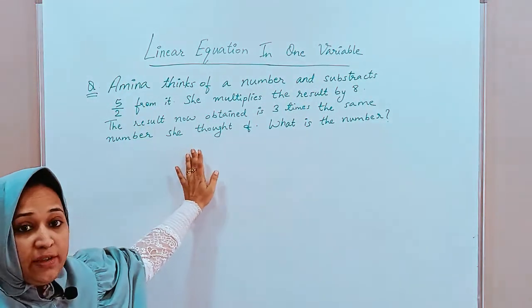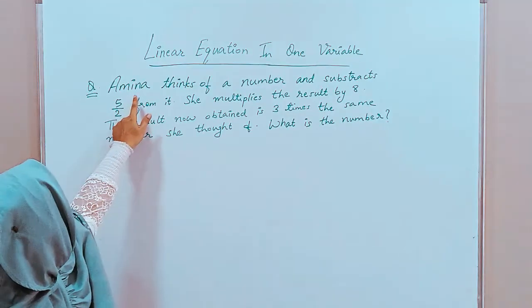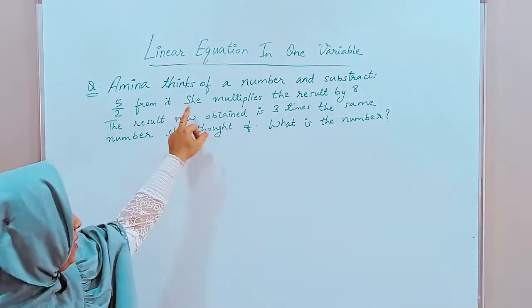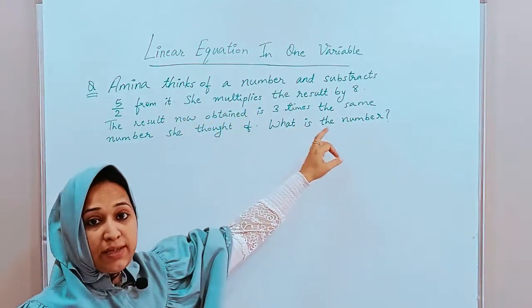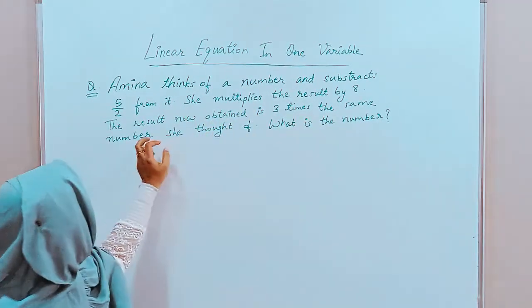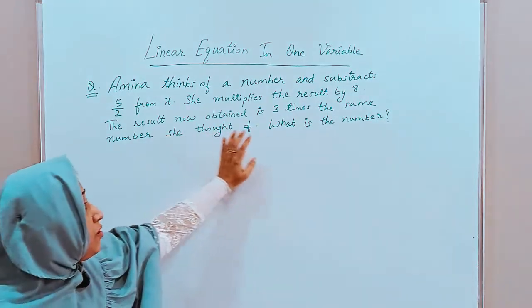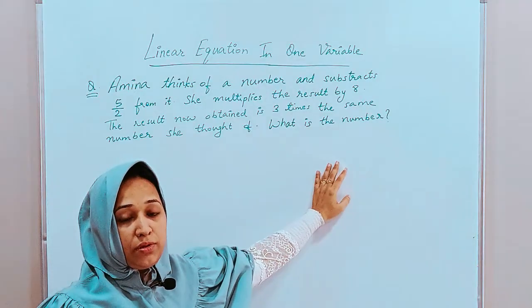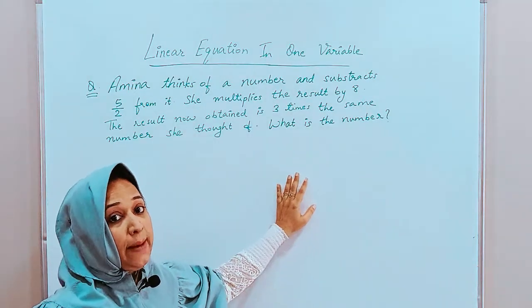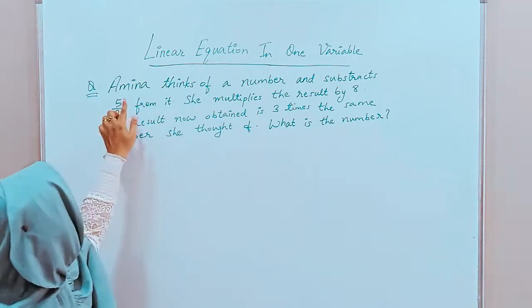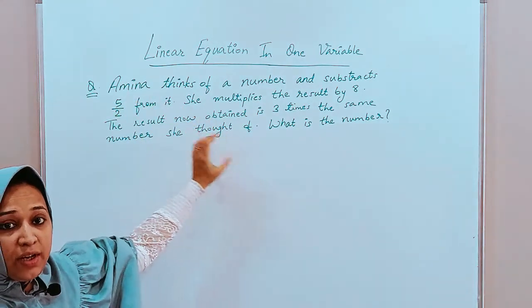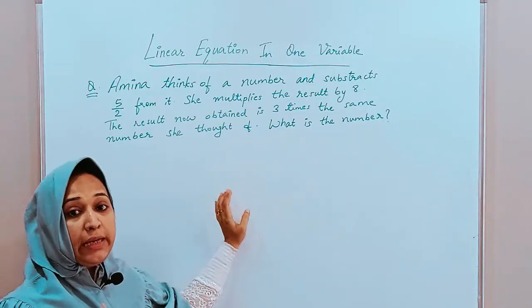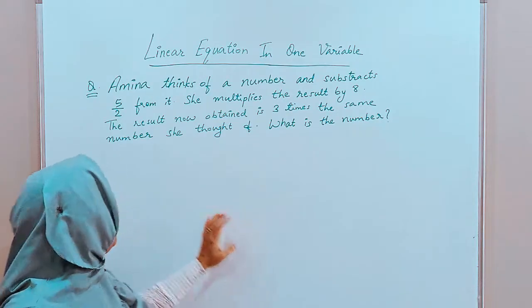Now, let us read the question first. Amina thinks of a number and subtracts 5 by 2 from it. She multiplies the result by 8. The result now obtained is 3 times the same number she thought of. What is the number? This is the word problem or application based on linear equation. So, identify each and everything clearly. Try to understand the question. Read it twice, thrice unless you are clear with it.